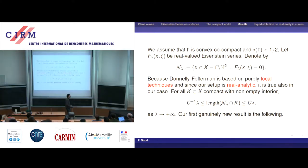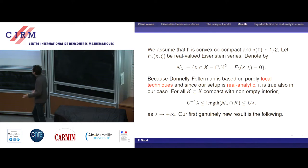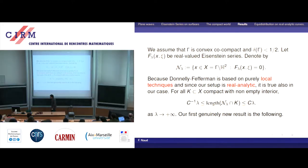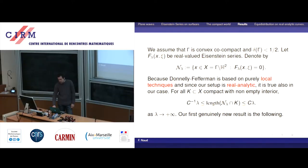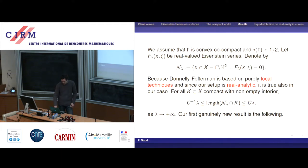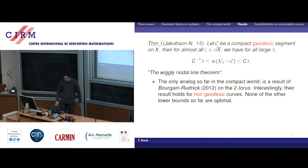If you restrict to a compact set, this Donnelly–Fefferman result is no big deal, because it is a purely local argument based on analyticity. If you look at what's going on in a small ball, it behaves more or less like a polynomial of degree lambda. It works because here it is obviously real analytic. What we were able to prove with Jakobson is the following statement, which is actually stronger than Donnelly–Fefferman — in principle you could recover Donnelly–Fefferman from this kind of statement.